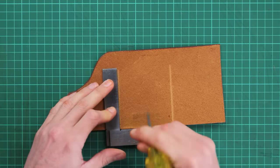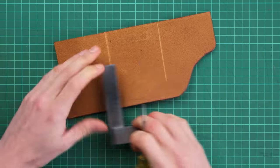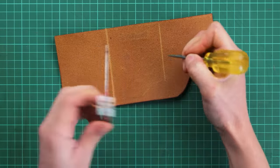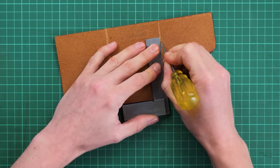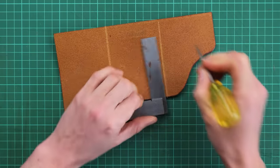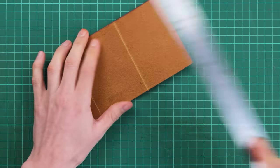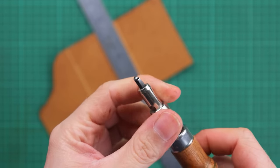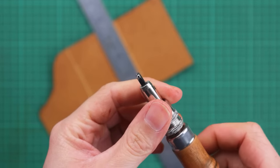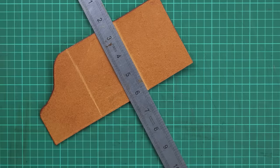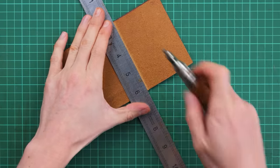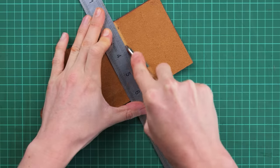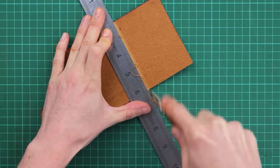And once you've got your marks transferred over you can then use a set square and draw a line between them just to get something to follow. And now this is the stitch groove that I have. I got this from Tandy if you need to get one. They are very good and we're just going to groove along that line so we don't need to take too much off. And what this is enabling us to do is just to get that sort of edge to fold in nicely when we come to glue it together.